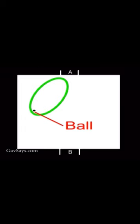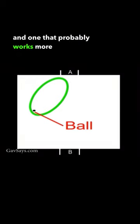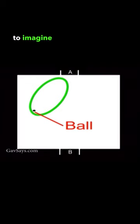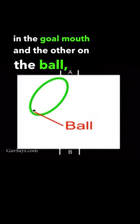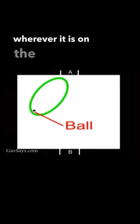A more sophisticated way of looking at this information, and one that probably works more practically, is to imagine the rugby ball painted with one of its tips in the goal mouth, and the other on the ball, wherever it is on the field.